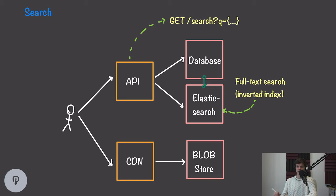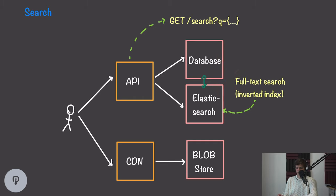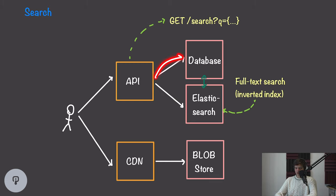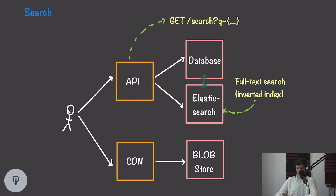The next problem to tackle is searching through all of this data. To enable search, we want to introduce a database that can store all of the text associated with our apps and index it for keyword search. Some databases have this built in, but we could also rely on an external service such as Elasticsearch. Any data written to our main database would also be written to Elasticsearch and indexed there. Elasticsearch uses a technology called inverted indexes to enable keyword search. When a user searches, the request goes to our API, which queries Elasticsearch to find relevant apps. The API can then query the database for additional context to produce an even more relevant results list.